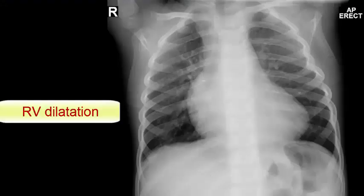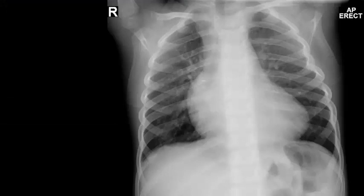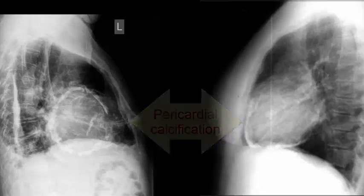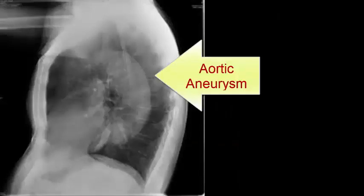Right ventricular dilatation increases heart size, displaces the apex upwards, and straightens the left heart border. Lateral or oblique projections may be useful for detecting pericardial calcification in patients with constrictive pericarditis, or a calcified thoracic aortic aneurysm, as these abnormalities may be obscured by the spine on the PA view.